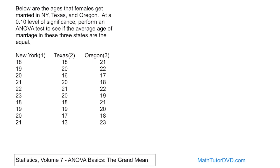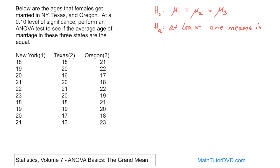The first thing we need to do is write down the null and alternate hypothesis. The null hypothesis is that the average age females get married in New York (mu sub 1) equals the average age in population two, which equals the average age in population three. That's the null — the currently accepted hypothesis we think is true. The alternate hypothesis means that at least one of these means is different. Even at the end of this test, I won't know which mean is different — you'd need testing beyond ANOVA to determine that.